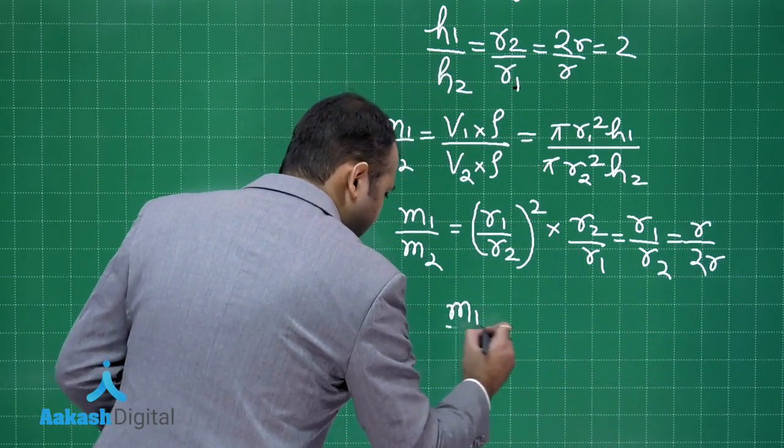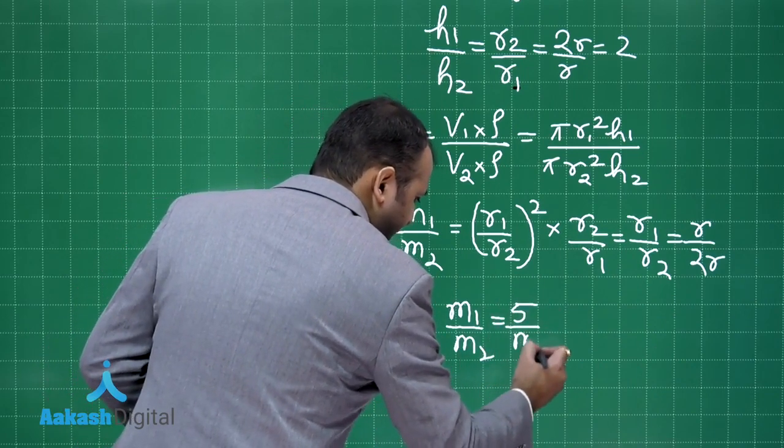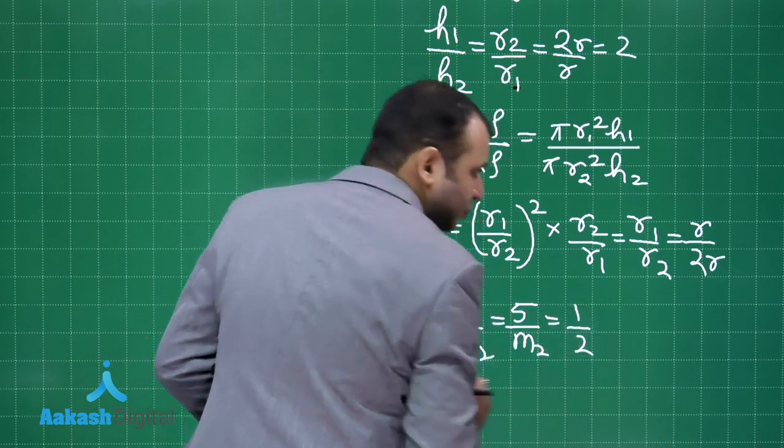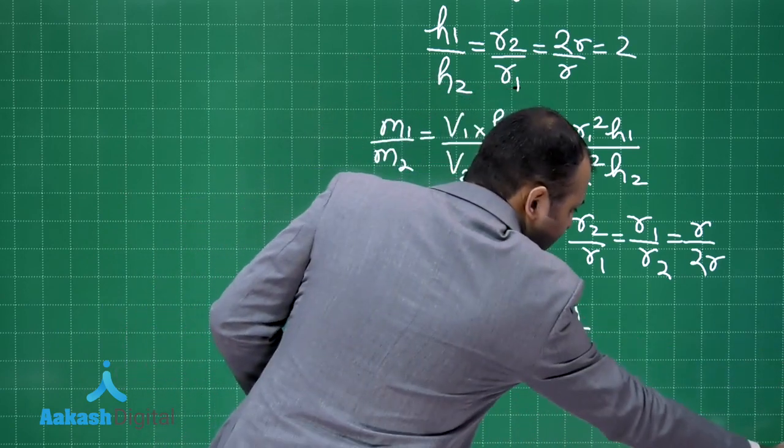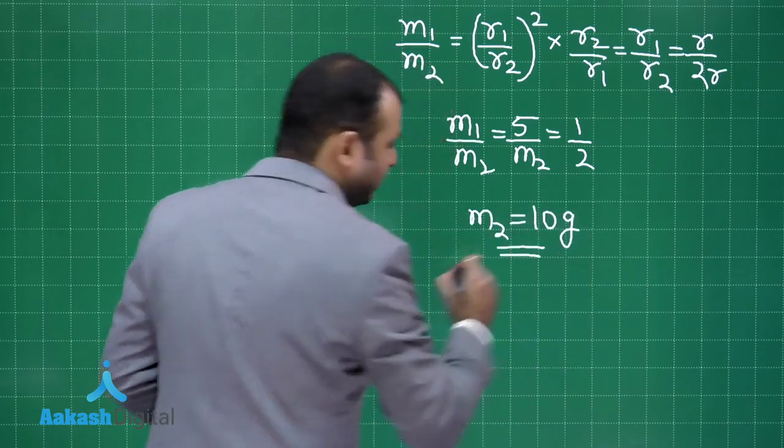So this will come to simply r1 by r2, which is equals to r by 2r. So m1 by m2 is equals to 5 by m2, because this is 5 grams we know that, that is equals to 1 by 2. Therefore we can say m2 will be 10 grams.